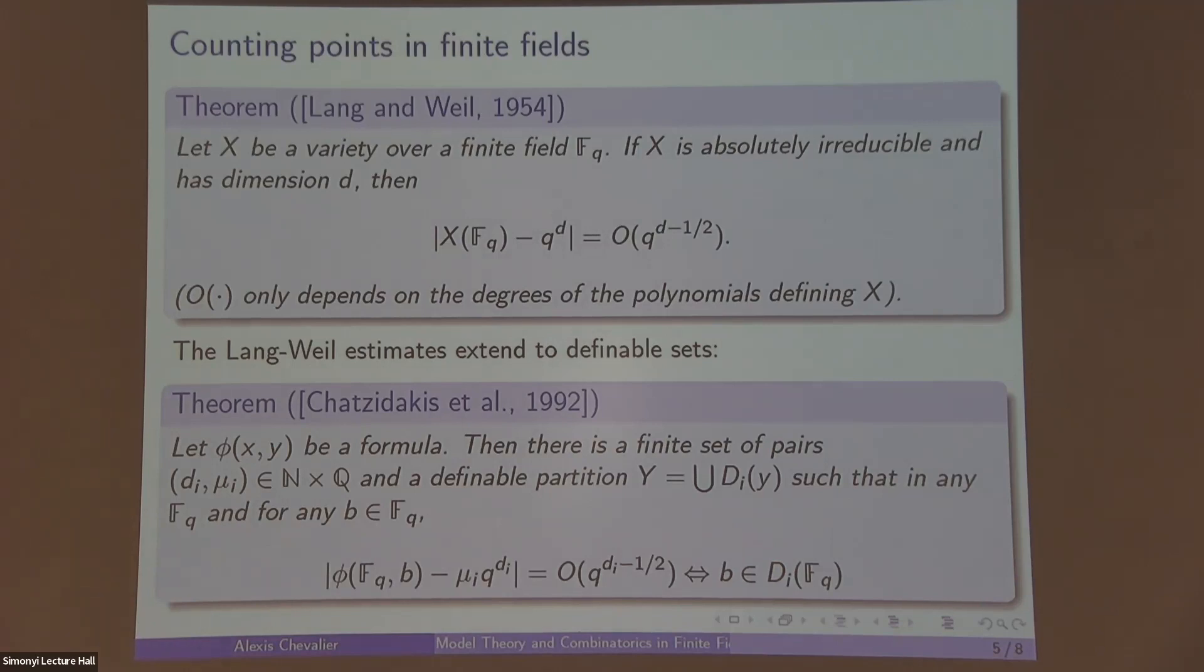With error rate big O of q^(d_i - 1/2), and the μ_i and d_i are determined by the elements of the partition in which b lies. Basically this is the generalization of Lang-Weil to definable sets. To give an example, we had the Paley graph before. μ_i for the Paley graph is a half, right? With probability a half, x + y is a quadratic residue in any, well, in large enough finite fields.